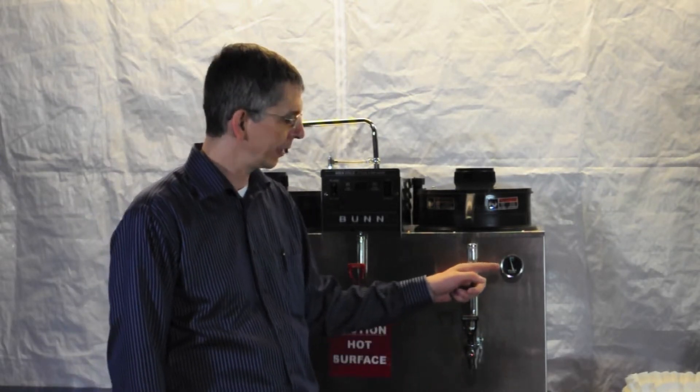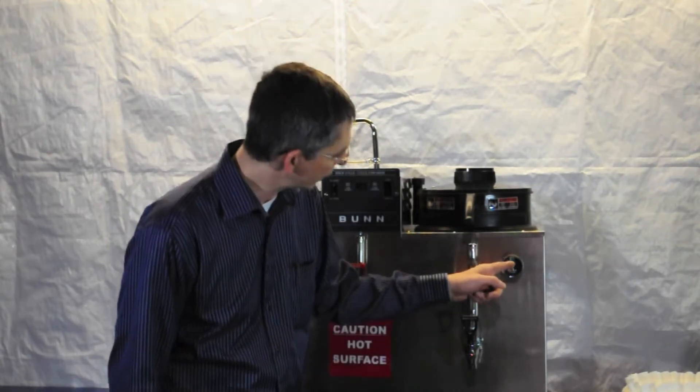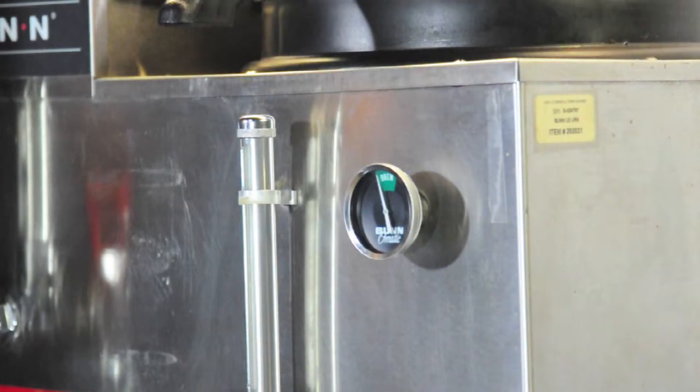First thing we want to do whenever we're brewing with the Bunn U3 Urn is make sure that the brew indicator is at or in the green brew area of the thermometer. Make sure that the water is at the optimum temperature for brewing coffee.